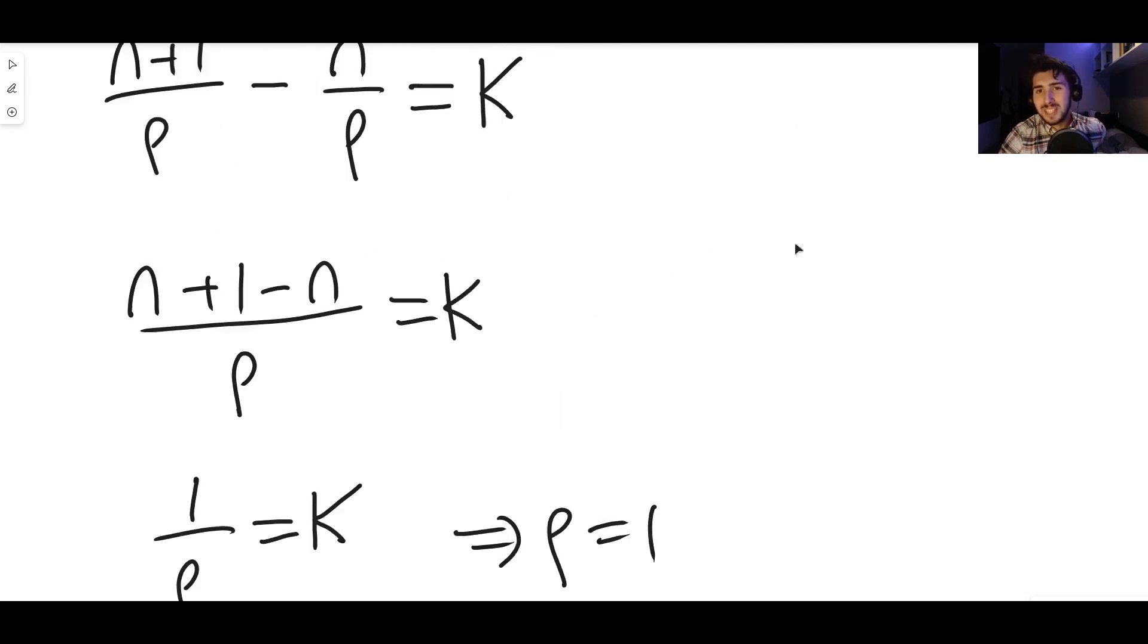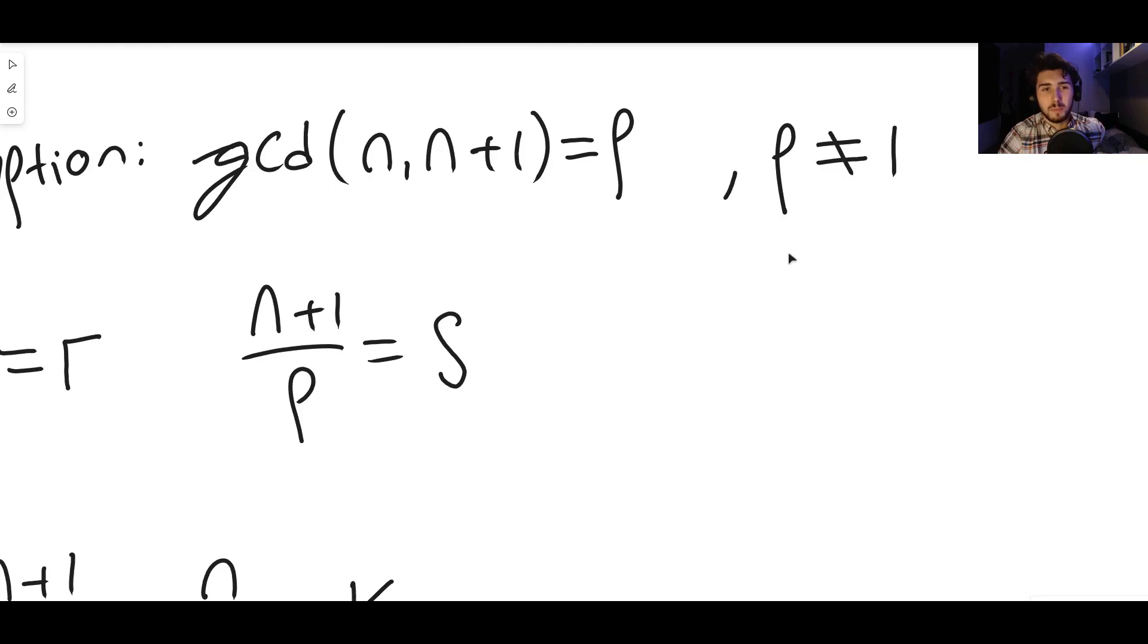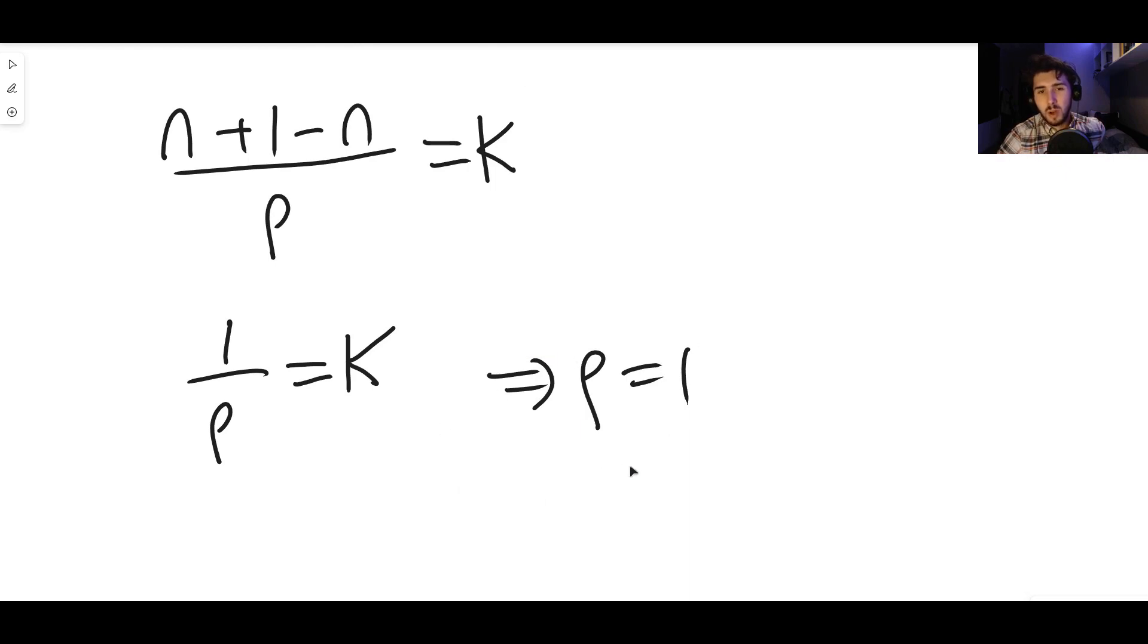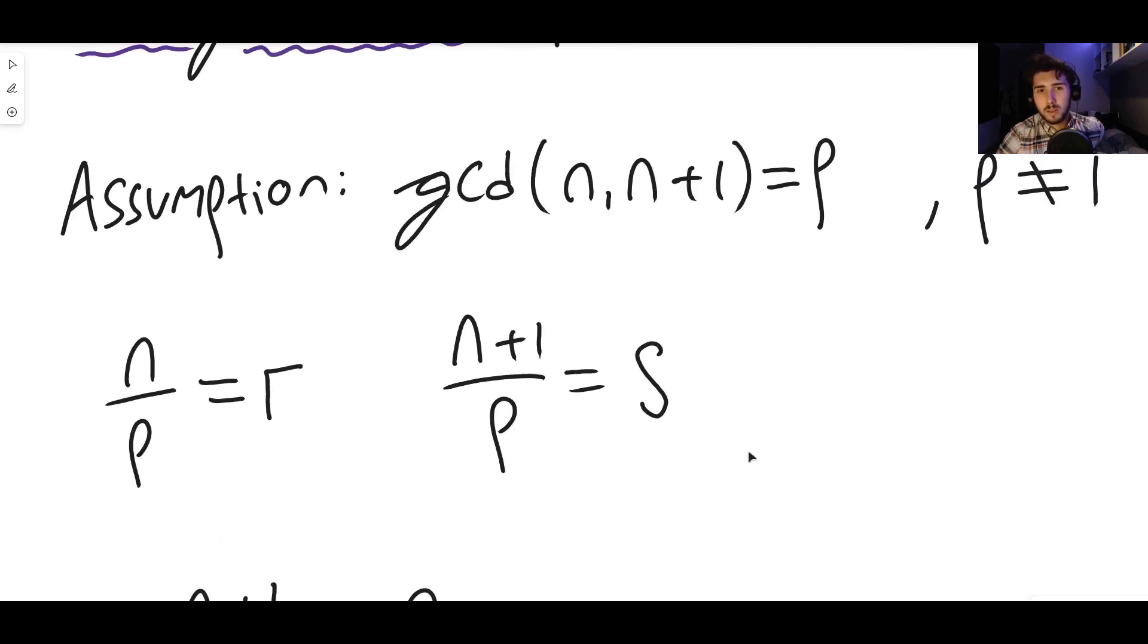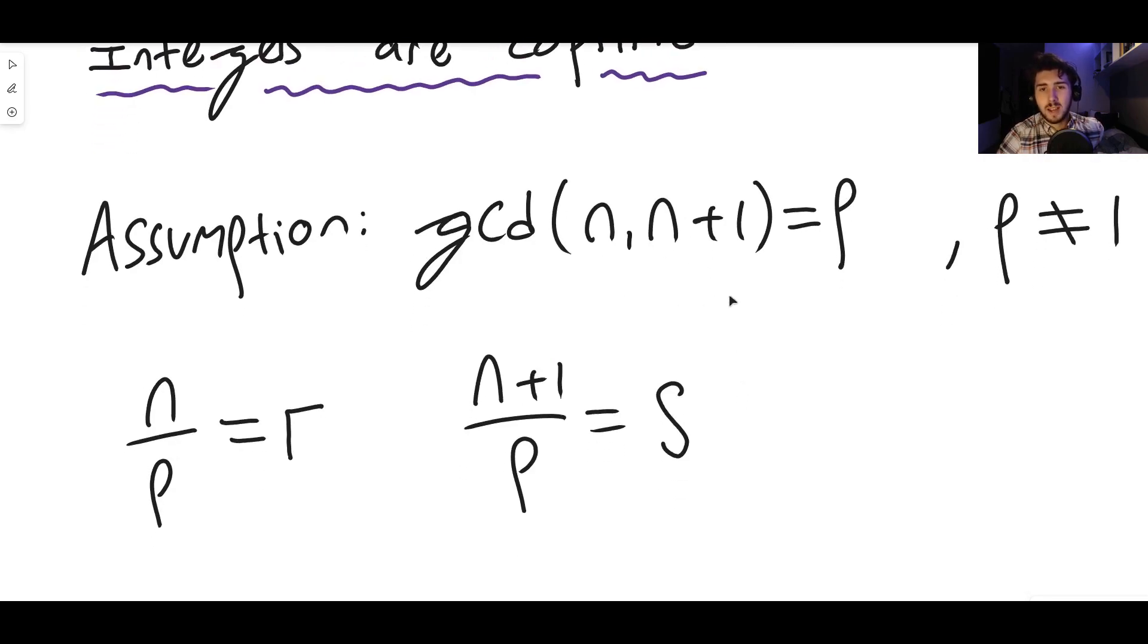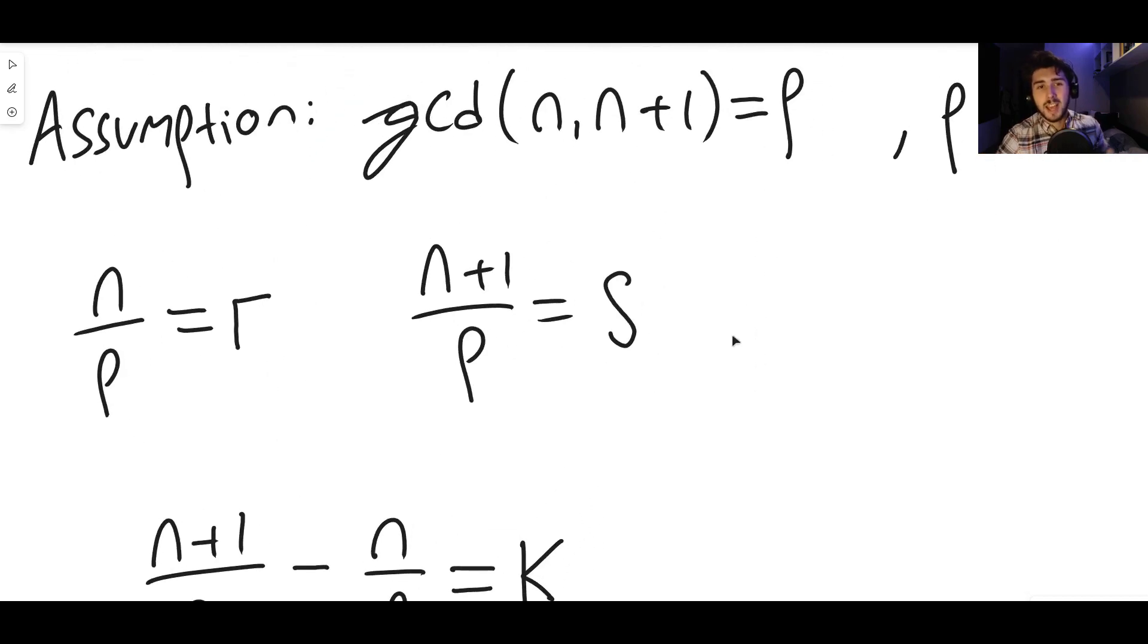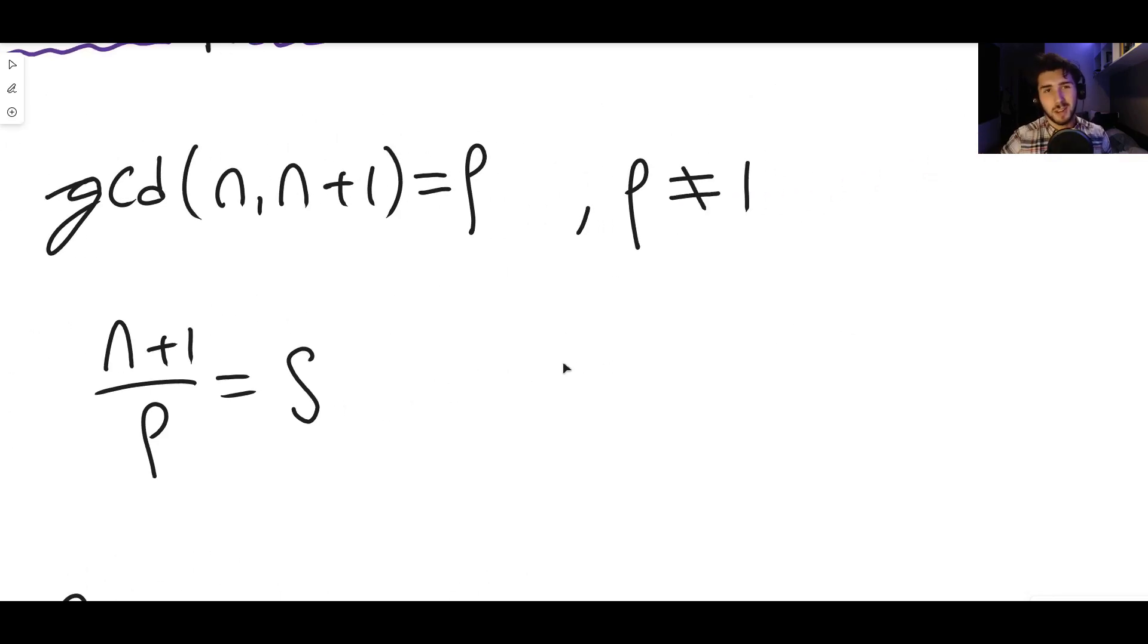But what did we say earlier? We said of course that p can't be equal to number one. For reasons I mentioned earlier, if two numbers have a greatest common divisor of the number one, they're still coprime. So we get a contradiction. The only value here that works is the number one. Therefore, the greatest common divisor of n and n+1 can only be one because n and n+1 are always coprime. And that's the proof. So n and n+1 for any value of n that's an integer, they must always be coprime with each other because we've just shown the only value for p that works here is when p equals one, and p is not allowed to equal one.